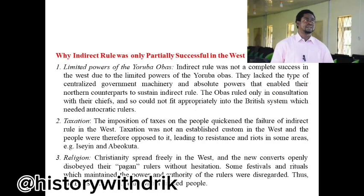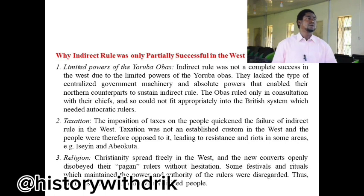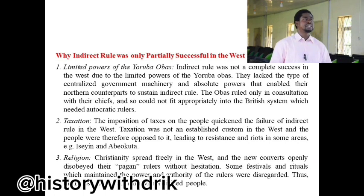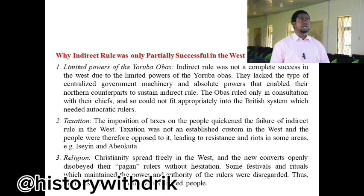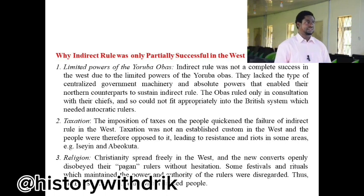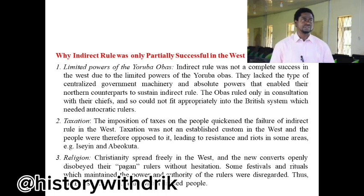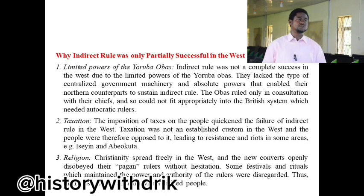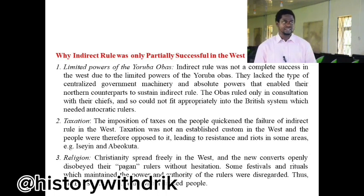We want to know why indirect rule was partially successful in the West. Number one was the limited powers of the Yoruba Obas. Indirect rule was not a complete success in the West due to the limited powers of the Yoruba Obas — they lacked the centralized government machinery and absolute powers that enabled their northern counterparts to sustain indirect rule. Point number two was taxation. The imposition of taxes weakened indirect rule in the West, as taxation was not an established custom, leading to resistance and riots in some areas, for example in Issei and Abeokuta.